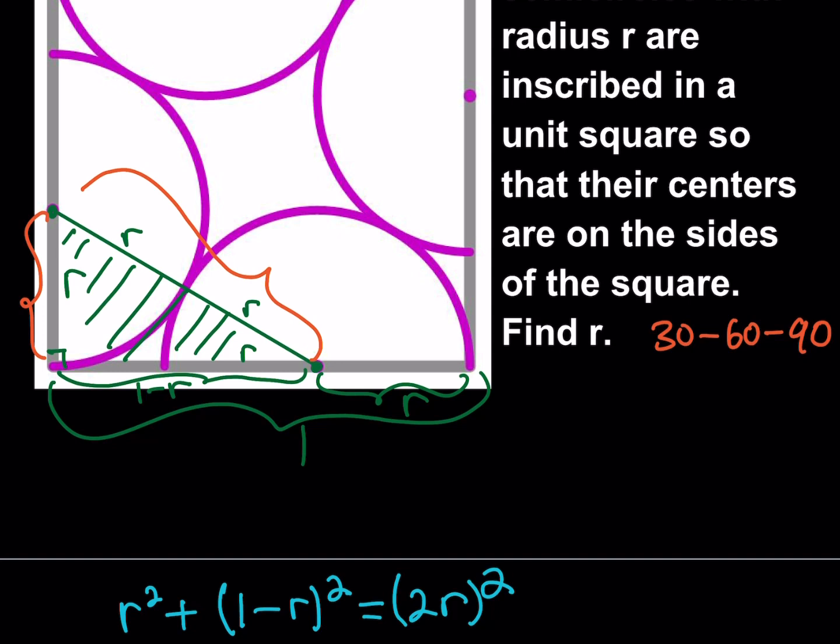What is that supposed to mean? Well if that's the case then we can safely say that the longer leg is just going to be root 3 times the shorter leg. Therefore 1 minus r, which is this length here, is going to equal r times square root of 3 which I can write as √3 r. Awesome.